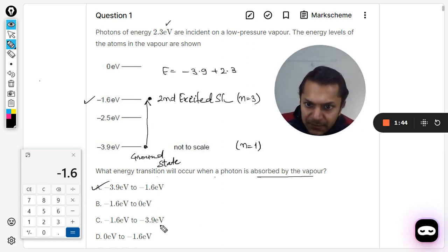My students, this is also given here you see. It is going from negative 1.6 to negative 3.9. The amount of energy will be 2.3 only but it will not be absorbed in that case. In that case, 2.3 electron volt energy will be released by the atom and that photon will be created by the atom but it will not be absorbed.